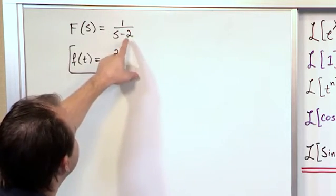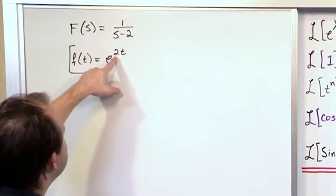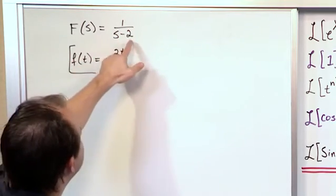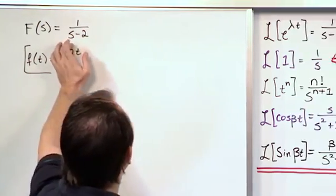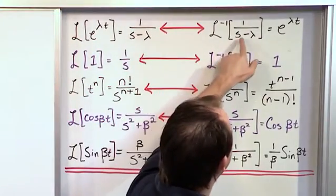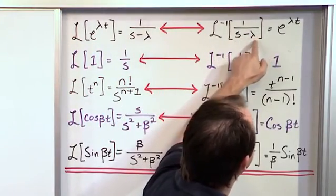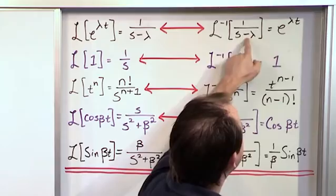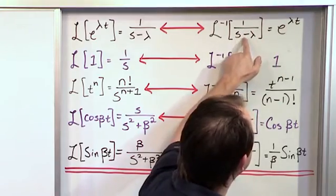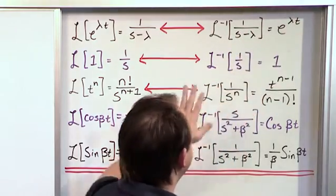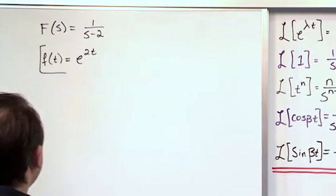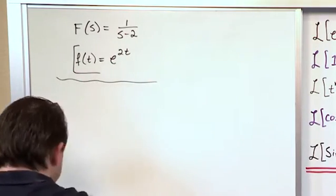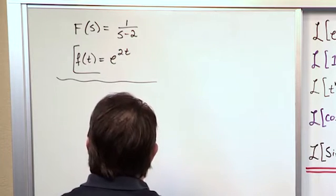Here you have s minus 2, so some people might put negative 2 here as a careless error. You have to really compare what you're doing. You have 1 over s minus 2. Here you have 1 over s minus lambda. So whatever is in the lambda spot goes there. It's already assuming there's a minus sign here, so you don't stick an extra minus sign up there. You have to do a careful comparison to make sure you're doing the right thing.